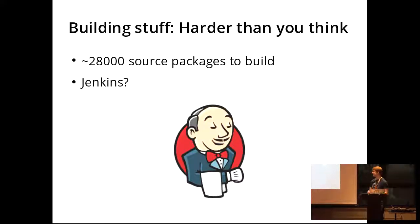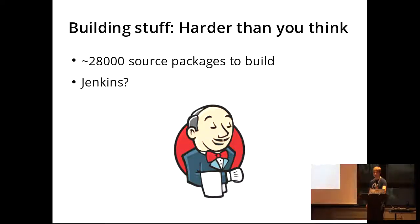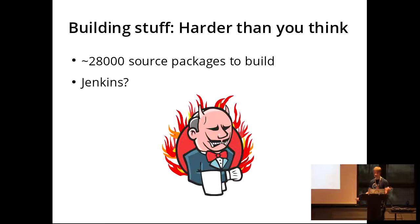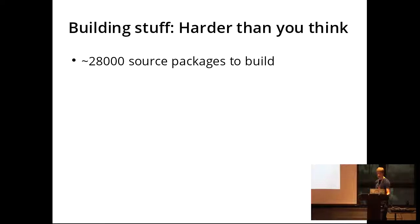So we went with Jenkins and created 28,000 jobs with a matrix in it, which led to about a gigabyte XML configuration file for Jenkins, which was actually pretty terrible. It worked for a small while, but even just rebooting Jenkins took about 40 minutes. While Jenkins is great for CI, it's not great for building a massive amount of packages. In the end, we went with Debile, which is a system written by Paul Tagliamonte, and made some custom glue for Tanglu in order to build a lot of these packages.